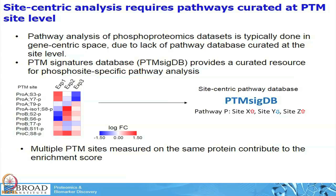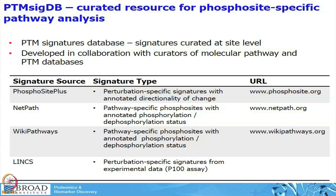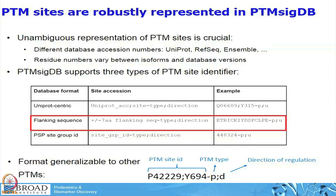This is a large curation effort, as you can imagine. It is very difficult to curate pathways at the gene level, but if you want to go deeper and curate at every single phosphorylation site — what does it do in this pathway, does it go up or down, is it involved at all — it is a lot of curation effort. Most of the signatures are human; we started to do it for mouse and rat too, but it is mostly human. We teamed up with database curators from PhosphoSitePlus, NetPath, and WikiPathways, and with the help of all these people we started to curate this database.